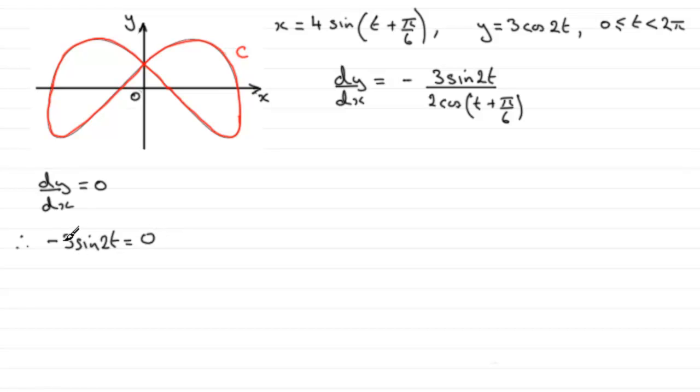Now, if I divide through by minus three, it means that therefore sine two t would equal zero. And to solve this, we just take the inverse sine to both sides. So two t would equal the inverse sine of zero.